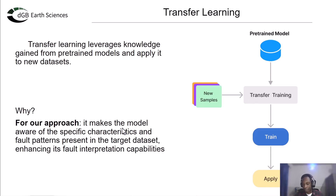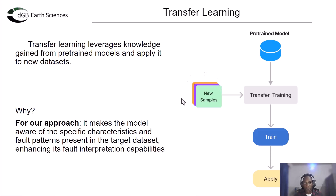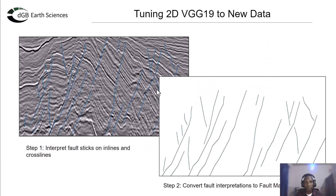In order to fine-tune our model, we also need the data and the labels. We're going to look at how to create new labels for our new dataset to use for fine-tuning. To do this, we need to use OpendTect to generate fault sticks — we'll draw a few fault sticks and then generate our fault mask, which will be used with our deep learning model for the image segmentation task.